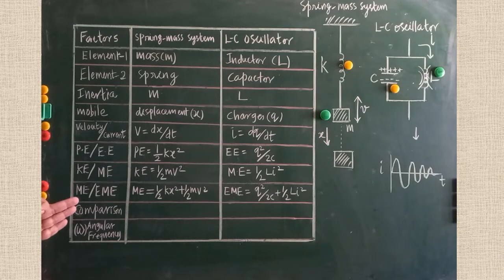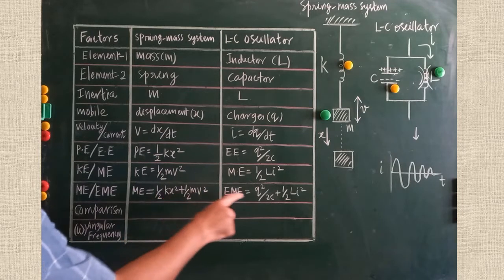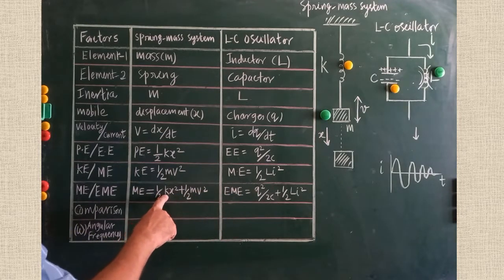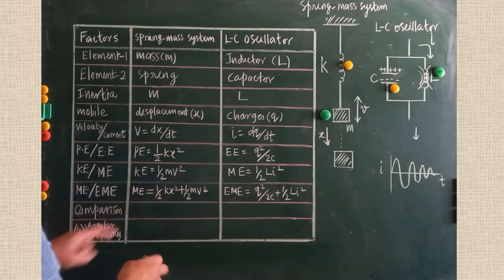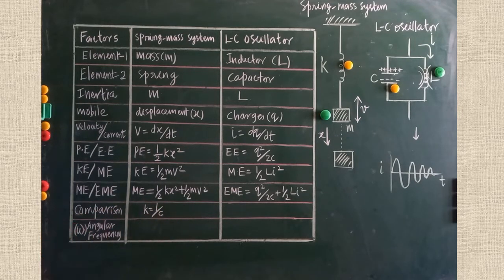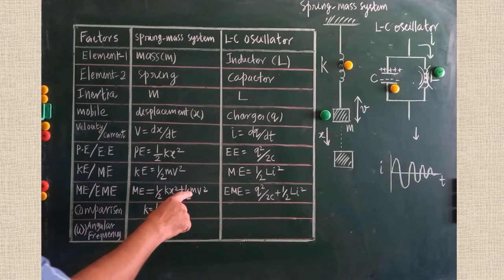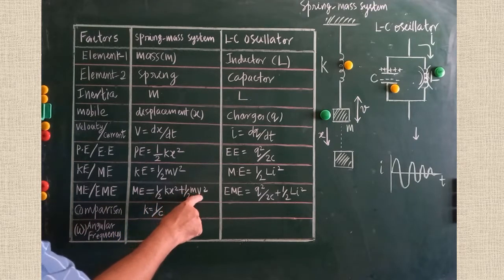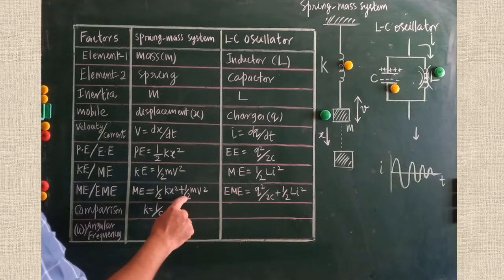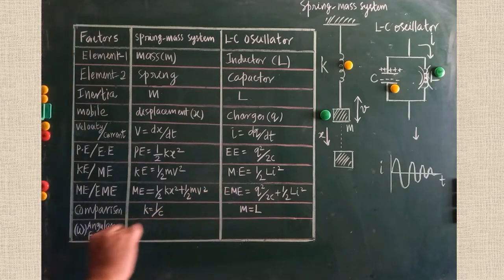Now we can compare certain things. Since X is compared with q, comparing ½kx² with q²/2C tells us that k corresponds to 1/C. Therefore, spring constant k = 1/C — the spring constant equals the reciprocal of capacitance. Comparing ½mv² with ½LI², since v corresponds to I, the remaining factor M corresponds to L. So M = L.